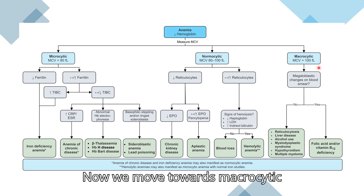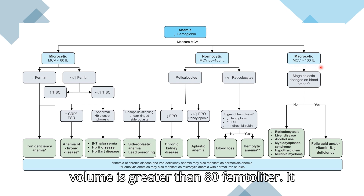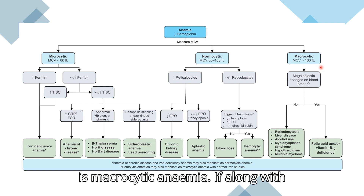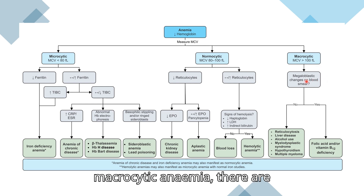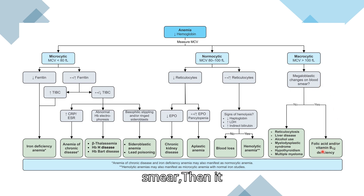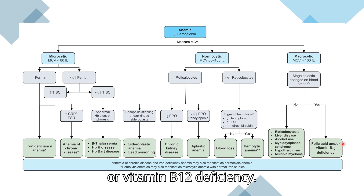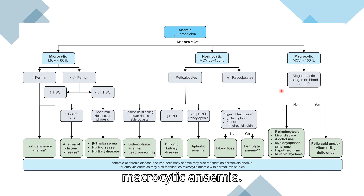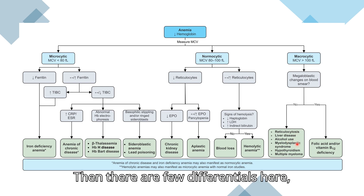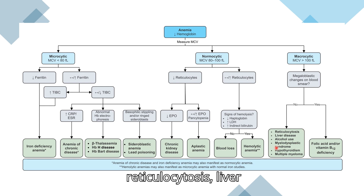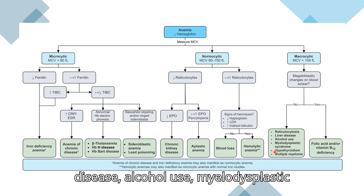Now we move towards macrocytic anemia. If MCV is greater than 100 femtolitres, it is macrocytic anemia. If along with macrocytic anemia there are megaloblastic changes on blood smear, this leads towards a diagnosis of folic acid or vitamin B12 deficiency. If there is non-megaloblastic macrocytic anemia, the differentials include reticulocytosis, liver disease, alcohol use, and myelodysplastic syndrome.